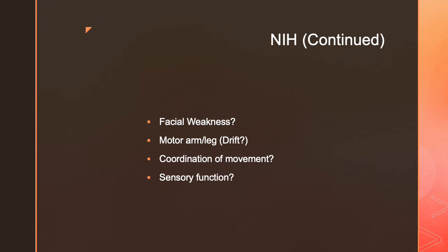Next we look at weakness and motor function. We start with the face — can they smile, raise their eyebrows — assessing facial muscle function. We also check motor function of the arm and leg, looking for drift. If a patient holds their arm straight up in the air, a stroke patient may show drift — their arm slowly or quickly drifting back down to the bed. We look at muscle strength in arms and legs: arms, they hold for 10 seconds; legs, they hold for 5 seconds.